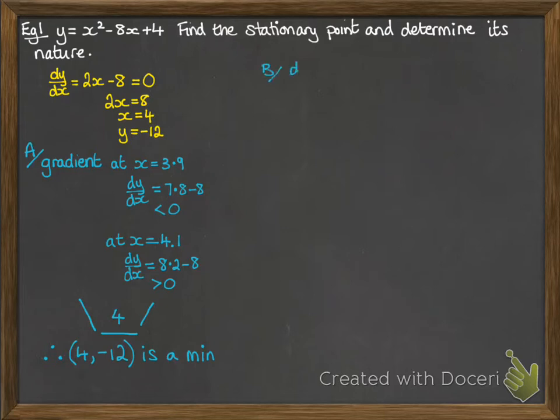Now, the second method is actually the preferred method for your AS work, and that is using d²y/dx². So that means that we differentiate a second time. So we differentiate dy/dx again to get the second derivative. So if you differentiate 2x minus 8, you get 2.